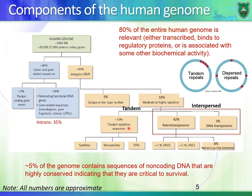If you look at the 55% repetitive DNA, about 10% of the human genome is made of tandem repeats. This can be categorized into different types: satellites, mini-satellites, and micro-satellites, also known as short tandem repeats.